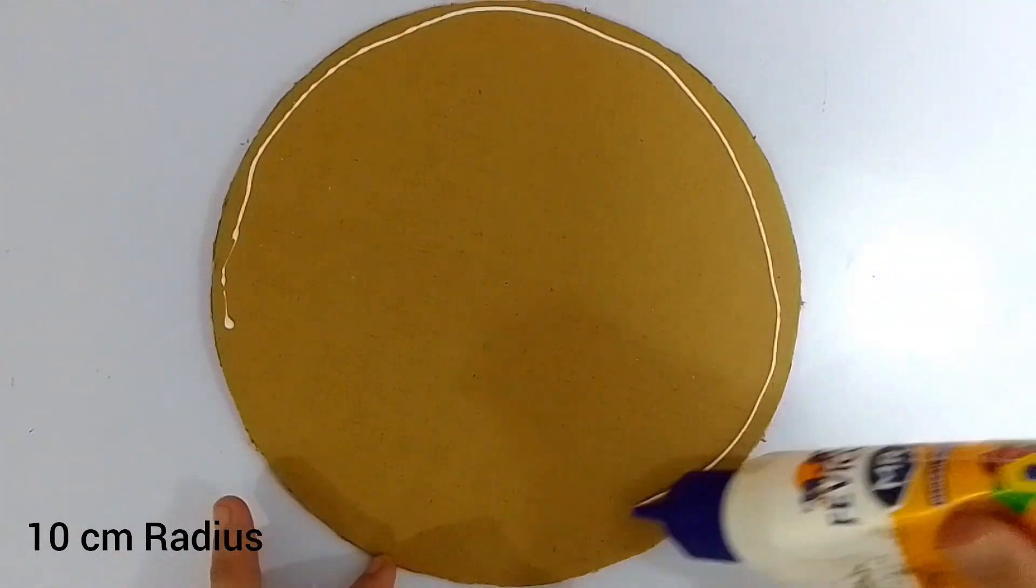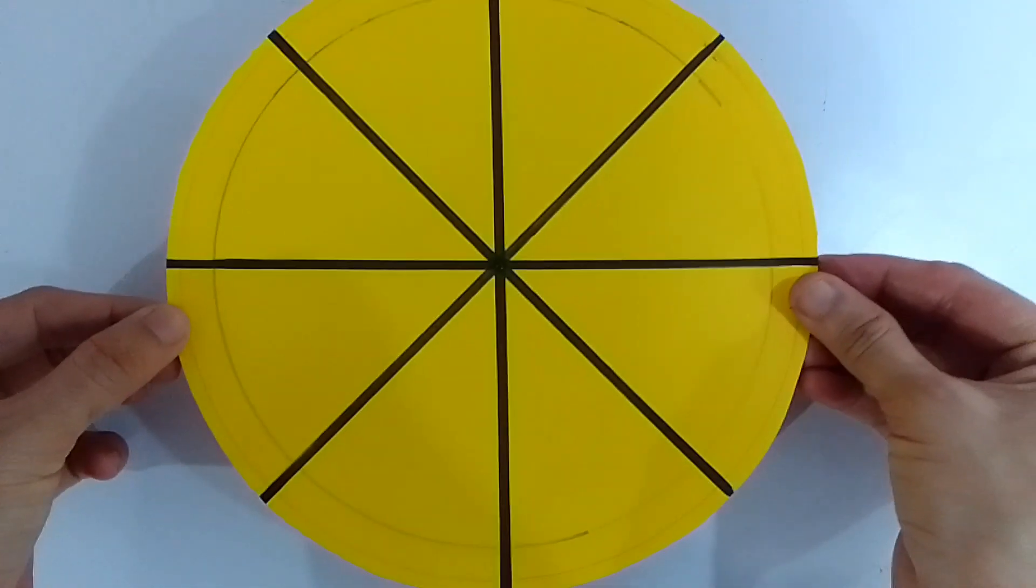Next, take a cardboard with a 10 cm radius and paste the yellow paper on it.